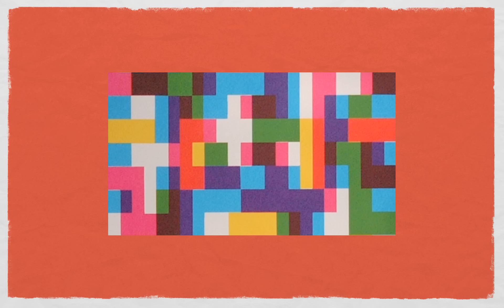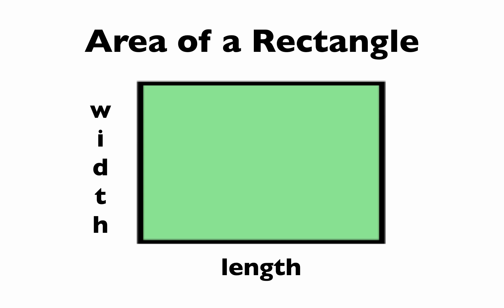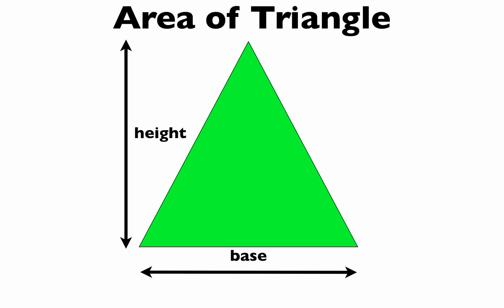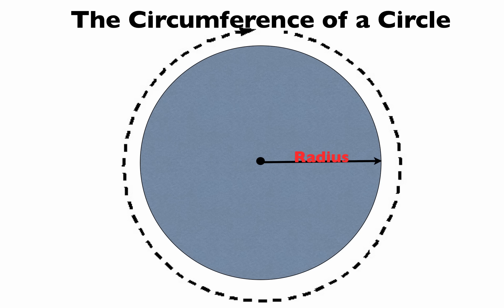Let's learn some geometry. The area of a rectangle equals length times width. The area of a square equals the length of its side squared, s squared. The area of a triangle equals one-half base times height. The area of a circle equals pi times the radius squared. The circumference of a circle equals two times pi times the radius.